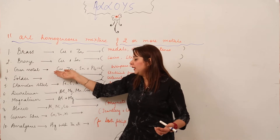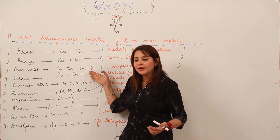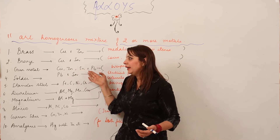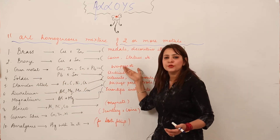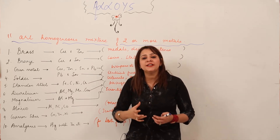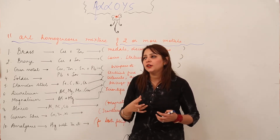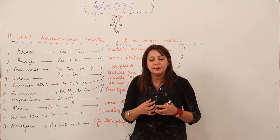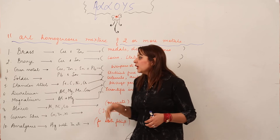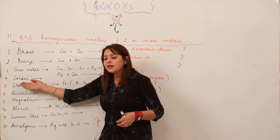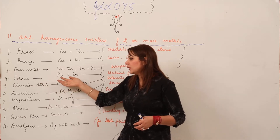The third alloy is gun metal, which is made up of copper, zinc, tin, and lead. It is used for making weapons — specifically, it is used to make the rifled barrels or bearings which are used in weapons.